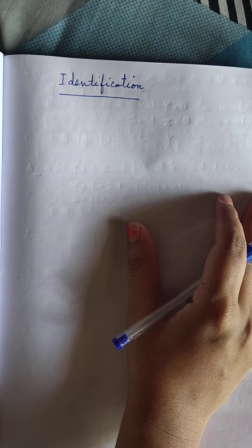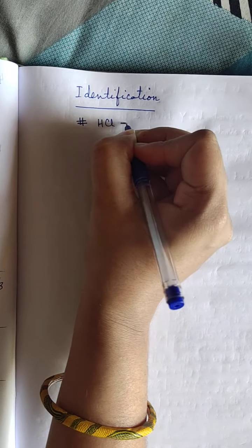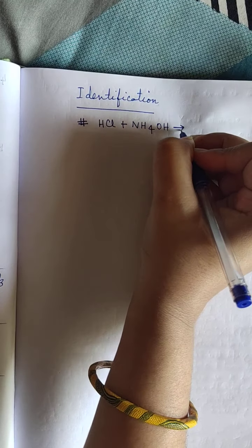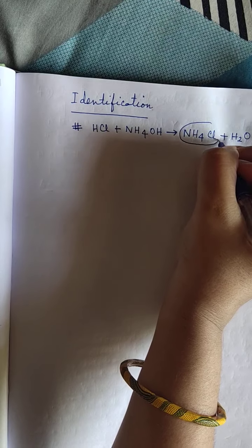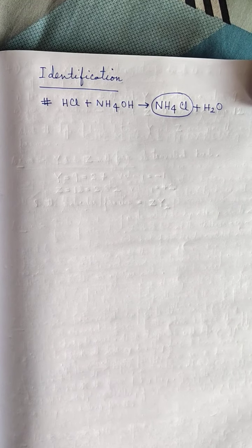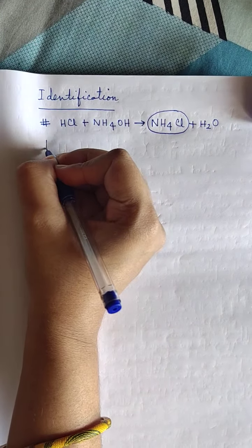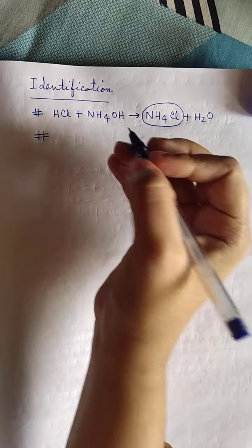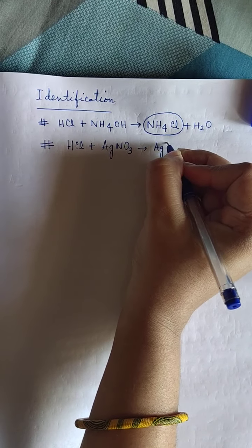Hydrogen chloride gas can be identified by two processes. First, when HCl gas is reacted with ammonium hydroxide, we get dense white fumes of ammonium chloride. In practice, a glass rod is dipped in NH₄OH and brought near the mouth of the test tube — dense white fumes of NH₄Cl appear instantly. Second, when hydrogen chloride gas is passed through a silver nitrate solution, it gives a white precipitate of silver chloride along with the production of HNO₃.